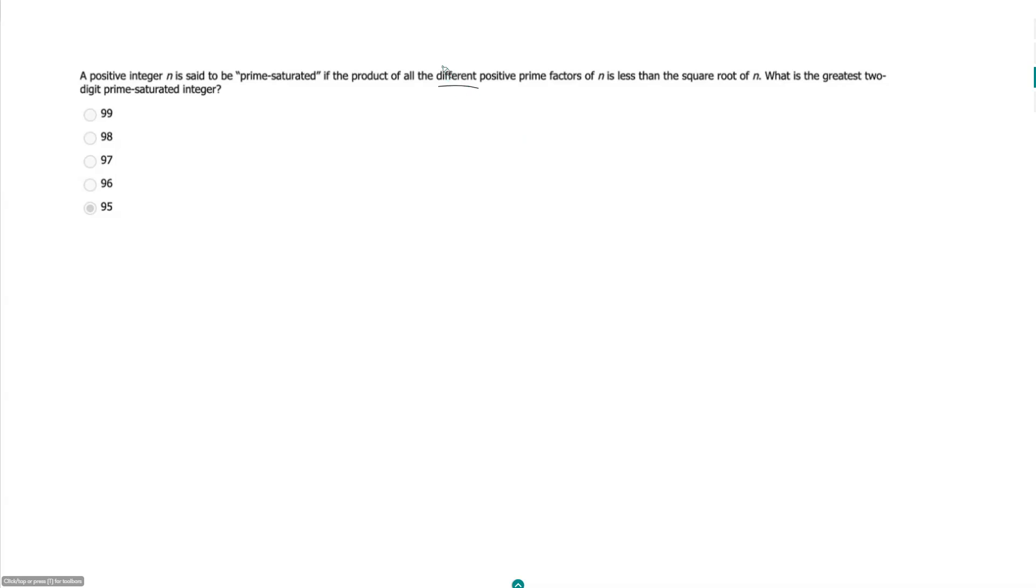So if we're trying to get a very low product here, then we want to choose as few numbers as possible. So we want to find our prime factors that will probably maximize our chances of getting us a prime saturated number.